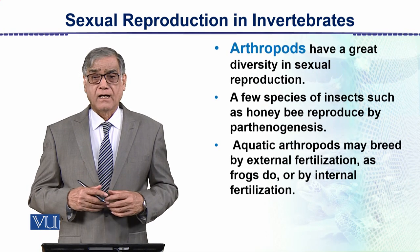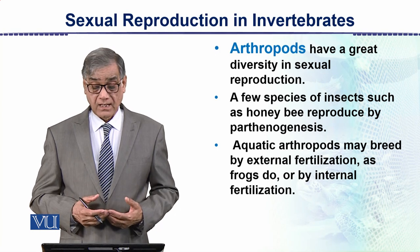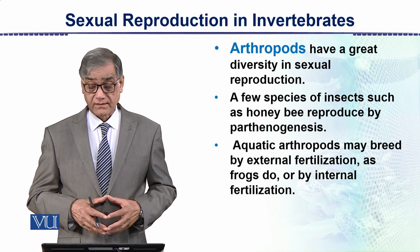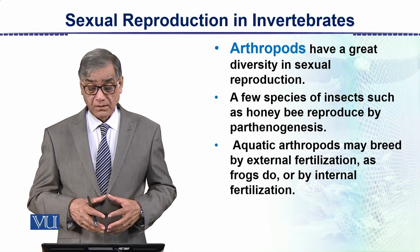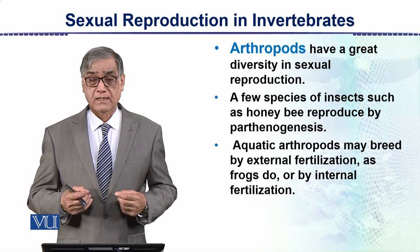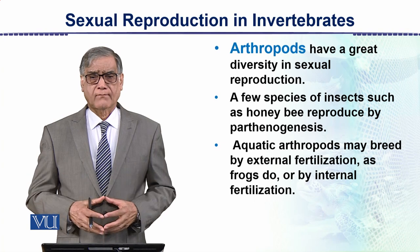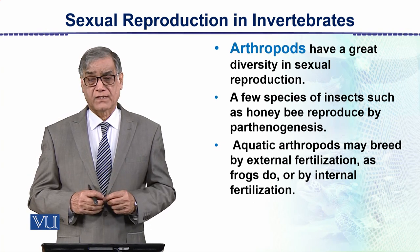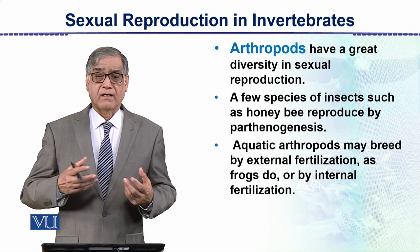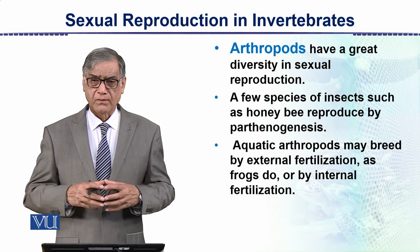Arthropods have great diversity. In hermaphroditic species, each individual has both male and female sex organs. A few species of insects, such as the honey bee, reproduce parthenogenetically, in which eggs without fertilization can develop. There are both diploid and haploid individuals produced.